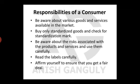Next is to buy only standardized goods and check for standardization marks. For example, when buying electrical appliances, switchboards, pressure cookers, or ovens, we should look for the ISI mark to confirm the product is standardized.